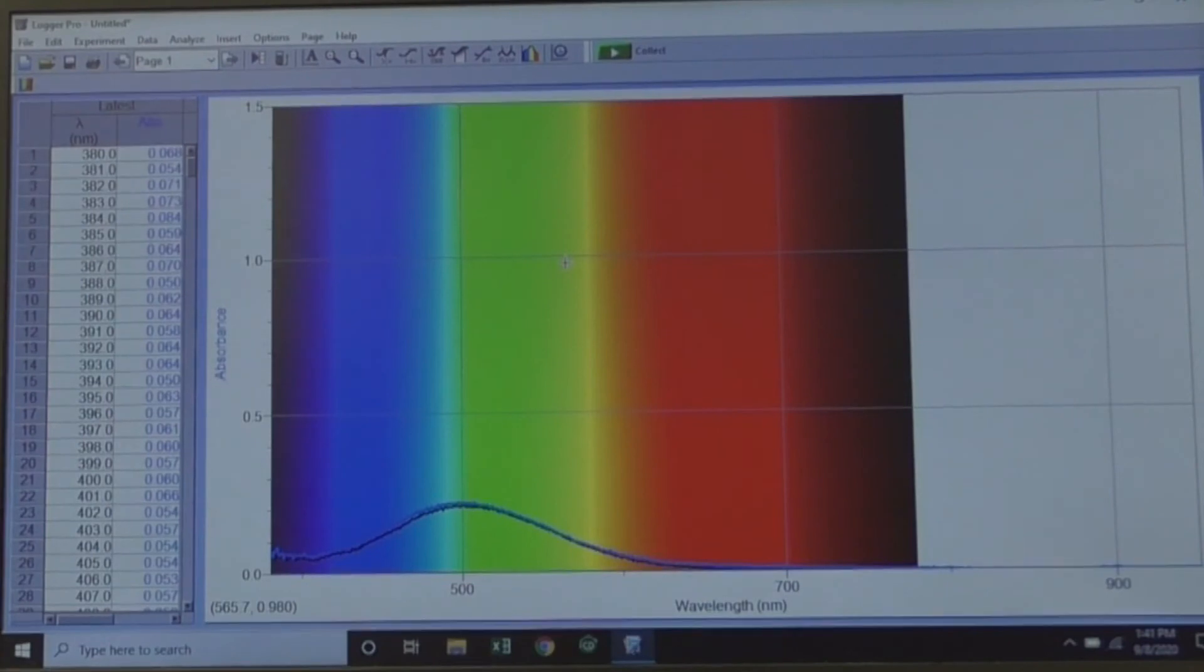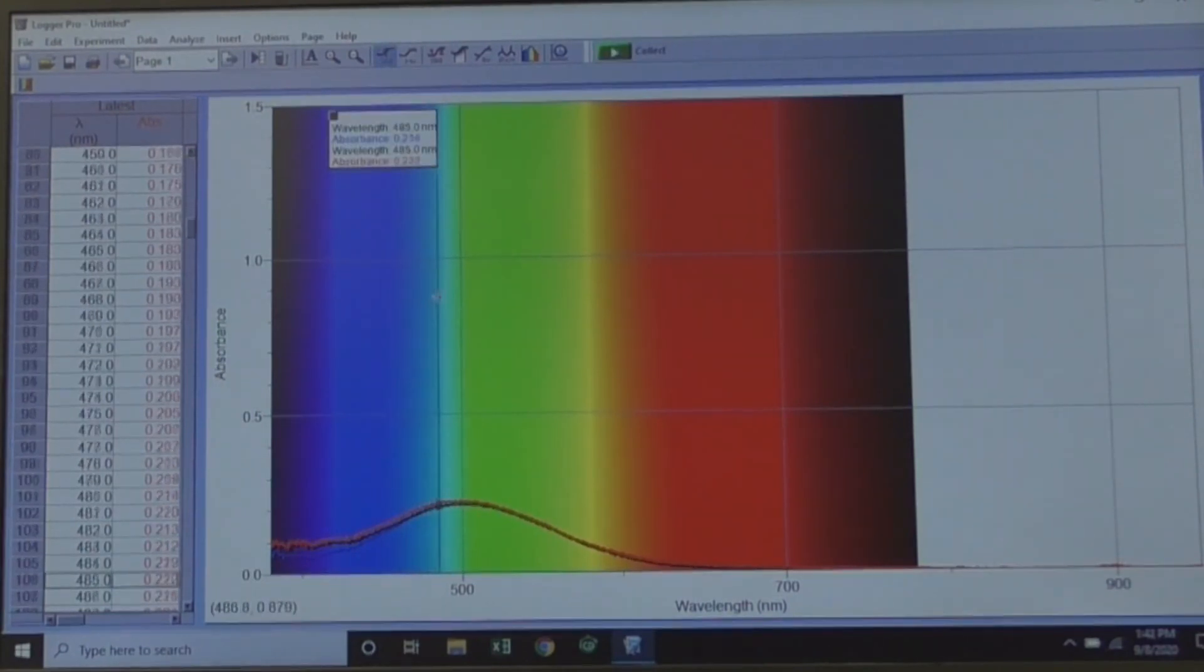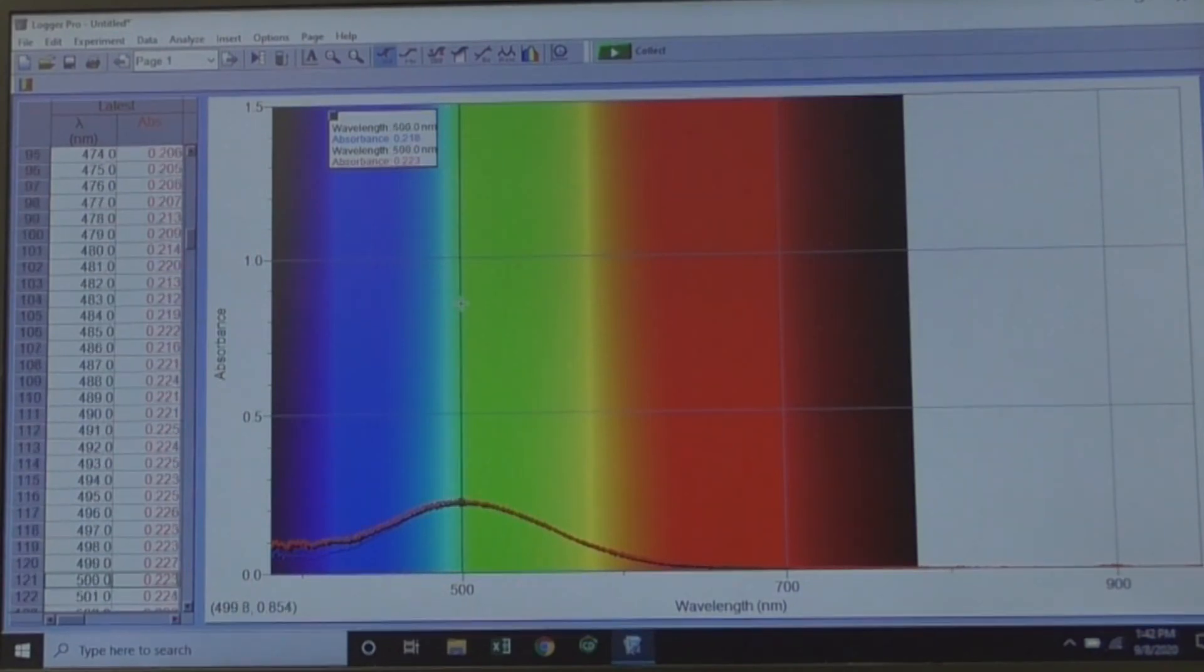Use the examine tool to read your results at 500 nanometers. In this example, the patient's result is virtually equal to the standard. Notice that the data is color coded. Here, the standard data is blue and the patient data is red.